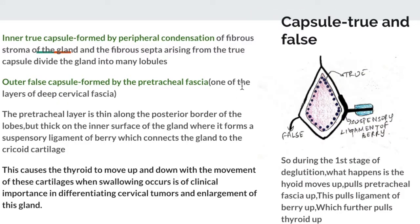Now coming to the capsule of the thyroid gland — this is a very important topic. The thyroid gland is formed of two capsules: an inner true capsule and an outer false capsule. The true inner capsule is formed by the peripheral condensation of the fibrous stroma of the gland itself. The false capsule is formed by the pre-tracheal fascia.